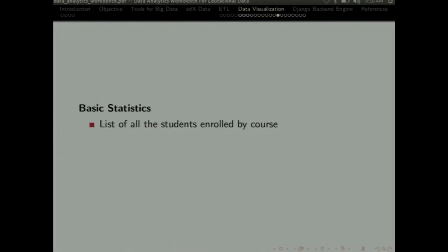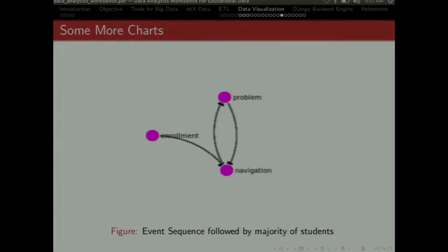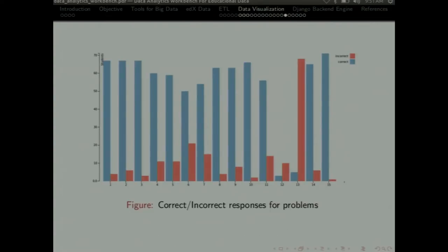Then we have basic statistics. In basic statistics, this is one of the most important graphs because it will be used further for predictions. And this graph shows the sequence followed by different users for completing a course or learning a course. And this graph shows different nodes like enrollment, navigation and problem. These are different types of events. And according to the sequence which different users follow, the intensity of the arrow shows how many users have gone through that path. And I will tell you some more charts. This is the correct and incorrect responses for problems. This is basically the quiz data which we gave. Each question shows the correct and incorrect responses for a problem for a particular quiz.